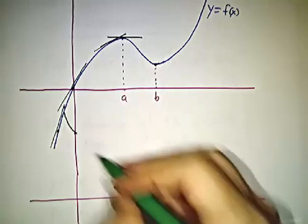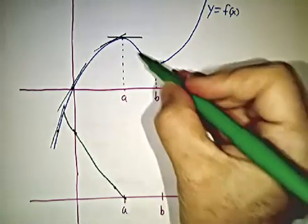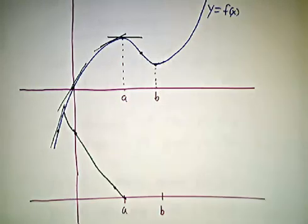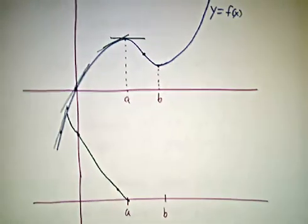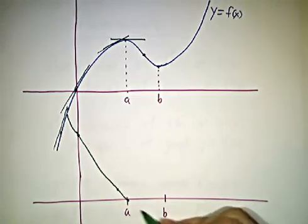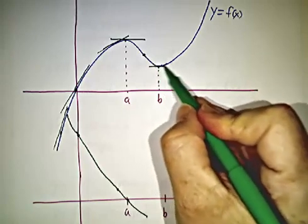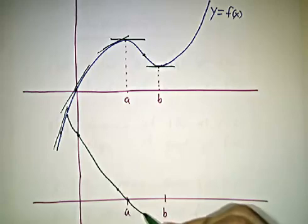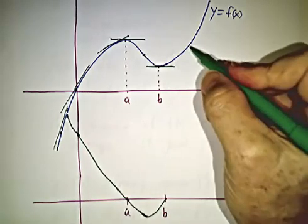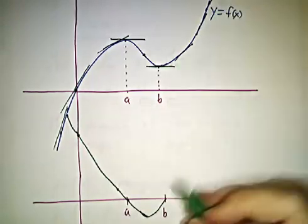At that point the derivative is zero. What about over here? The slope is negative — it's going downhill — so the derivative is negative. Then it bottoms out. Over here the slope is zero, it's flat again, which means the derivative is zero again. Over here the derivative is positive, and further along it's more positive, and even more positive.